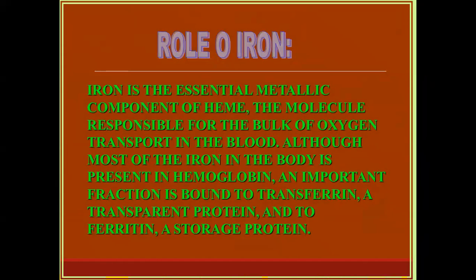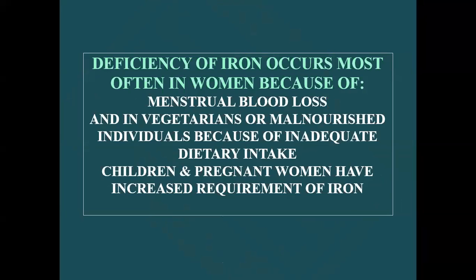Iron is the essential metabolic component of the heme molecule, responsible for the bulk of oxygen transport in the blood. Although most of the iron in the body is present in hemoglobin, an important fraction is bound to transferrin, a transport protein, and to ferritin, a storage protein. Deficiency of iron occurs most often in women because of menstrual blood loss, and in vegetarians or malnourished individuals because of inadequate dietary intake.